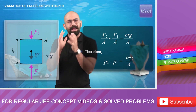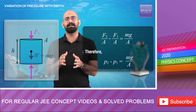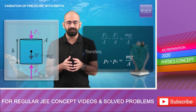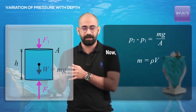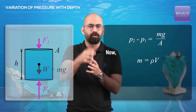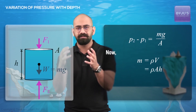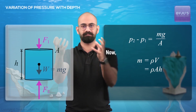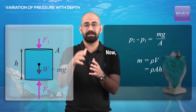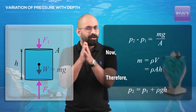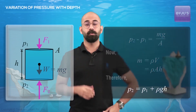Now, what about M? M is the mass of this volume. And if I have to write it in terms of density, it's just density into this volume, which is nothing but ρ × A × H, because AH is the volume of this cylinder of water. So therefore, if I replace that in the equation, I get P2 equals P1 plus ρGH.